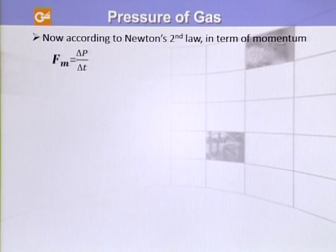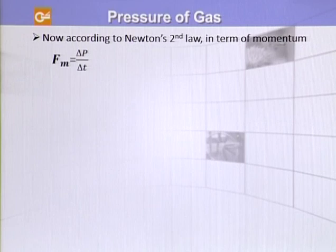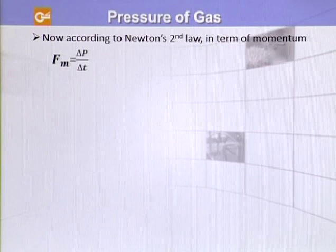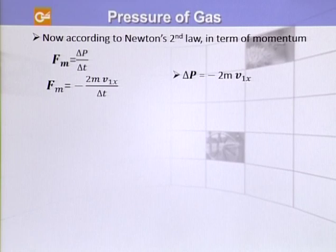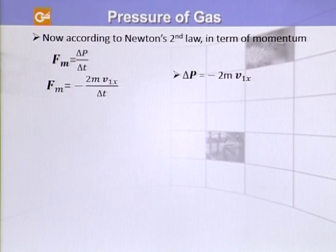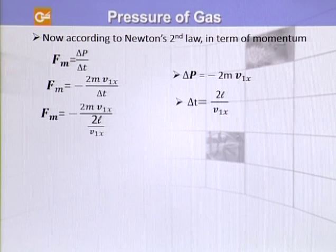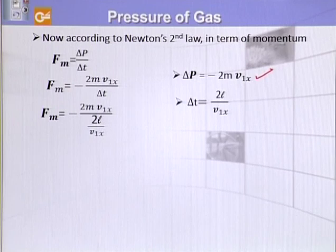Now, according to Newton's second law, the rate of change of momentum is equal to force. So if we calculate the force that this molecule transfers to face ABCD when it collides, that force on the molecule is FM = delta P / delta T. Here we have calculated delta P, which is the change in momentum, and we have also calculated the time. Putting the value of delta P first, it would be −2MV1X / delta T.